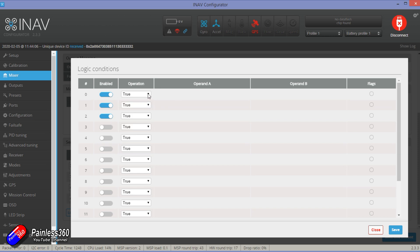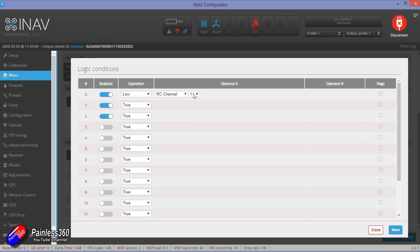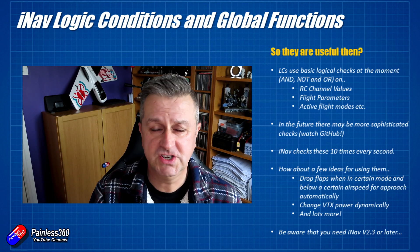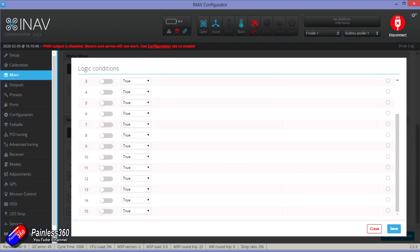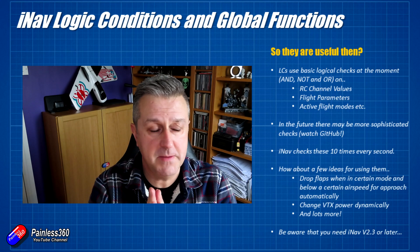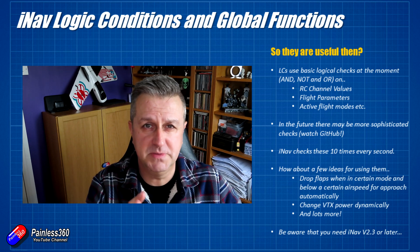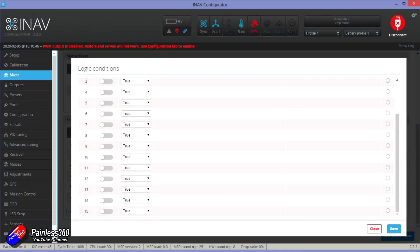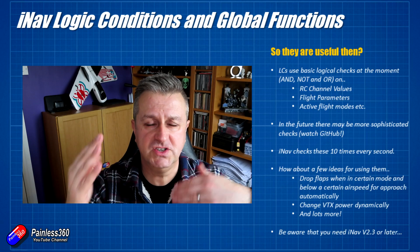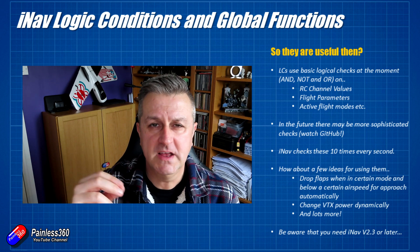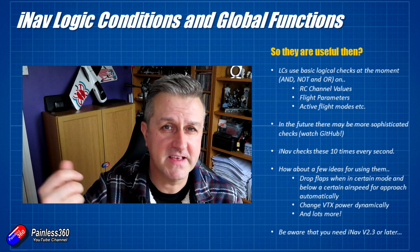They can only test very simple logic conditions — and, not, or — on a number of things. That includes RC channel values, which is what I'm going to use in the example in a moment, some slightly more sophisticated ones like flight parameters, and even active flight modes. It's quite binary at the moment, but logical conditions is a feature that's going to be further enhanced. There's a total of 16. iNav checks these logical conditions 10 times every second to see whether or not they are true. If they are, it essentially turns that logical condition on — almost like a little physical switch being flicked in iNav — and then that switch can do stuff.